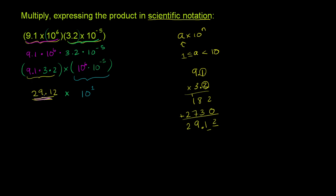So 29.12, this is the same thing as 2.912. Notice, what did I do to go from there to there? I just moved the decimal to the left. Or another way to think about it, if I wanted to go from here to there, if I wanted to go from here to there, what could I do to this? Well, I would multiply it by 10.